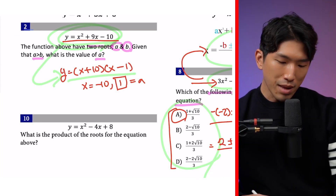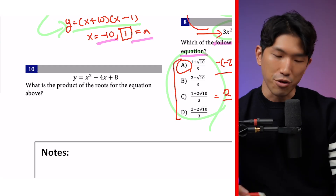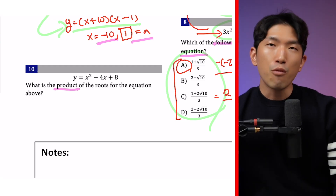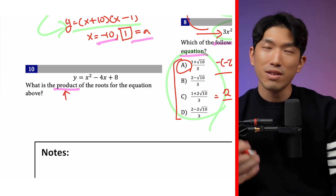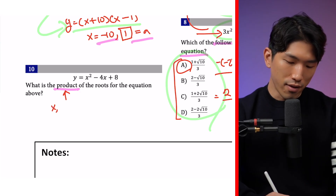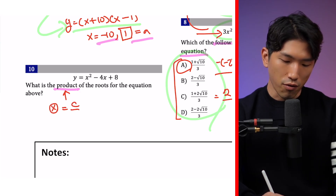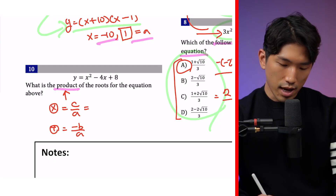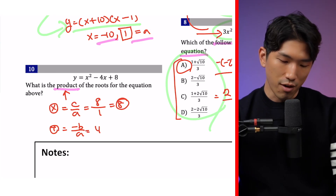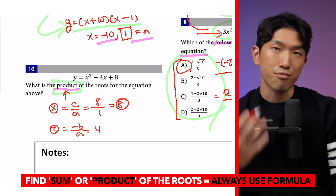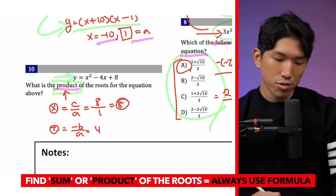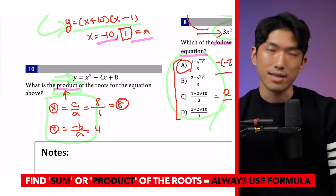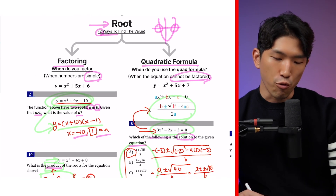There's one more thing to know about roots: sometimes the SAT won't ask for the exact value but instead asks for the product or sum of the x-intercepts. In that case, use these simple formulas: for the product, use c over a; for the sum, use negative b over a. In this example, our product is just 8 over 1, so the product is 8, and the sum is 4. The main takeaway is: whenever the SAT asks for a product or sum of the roots, go straight to these formulas instead.